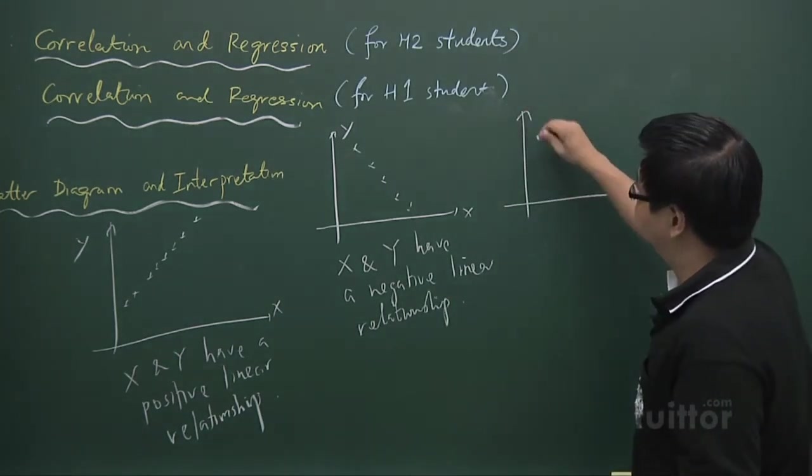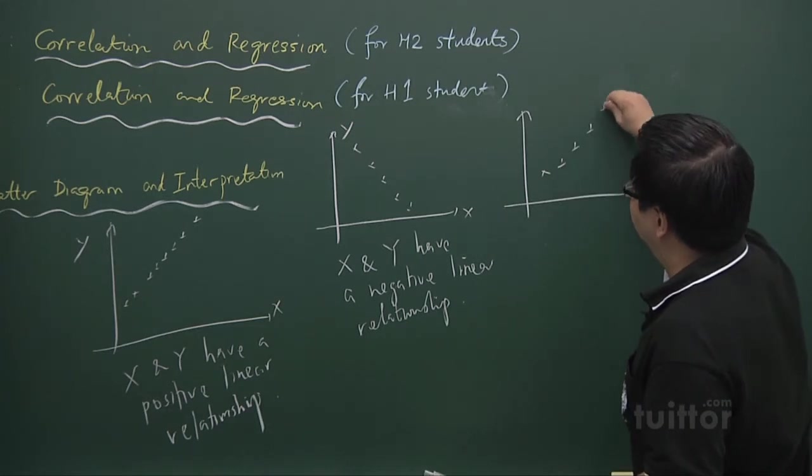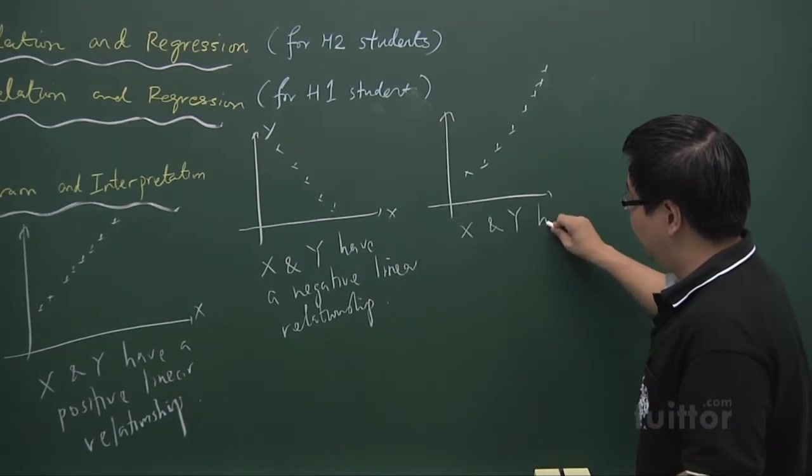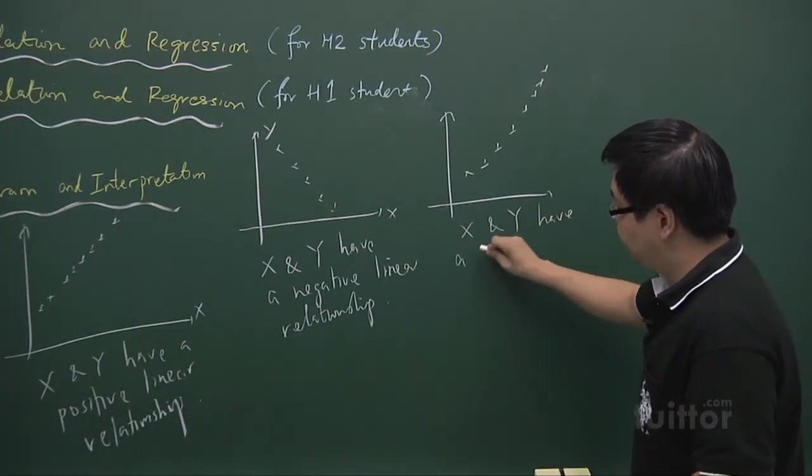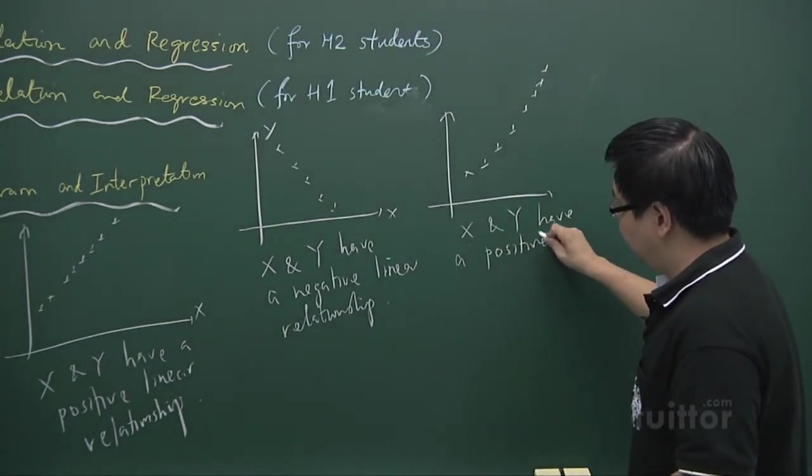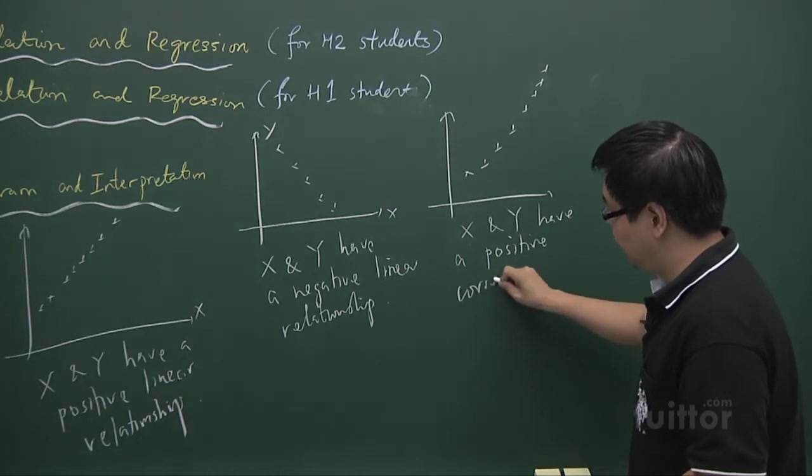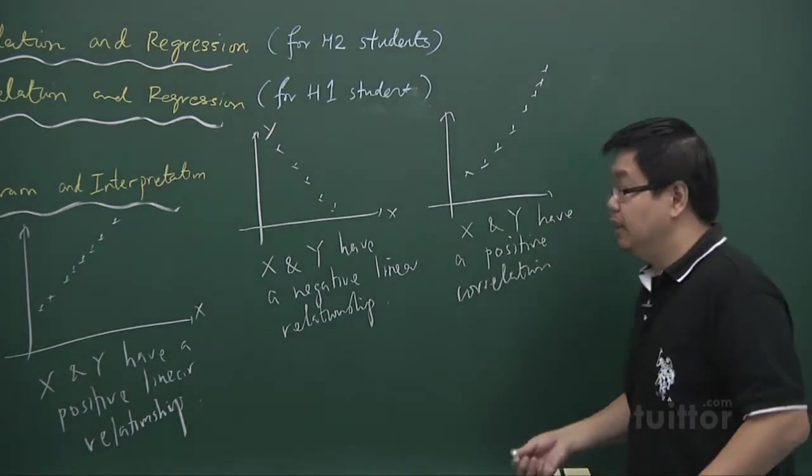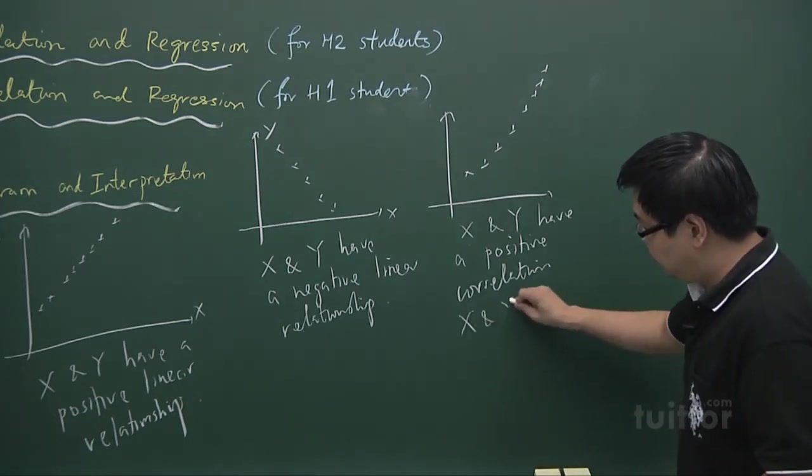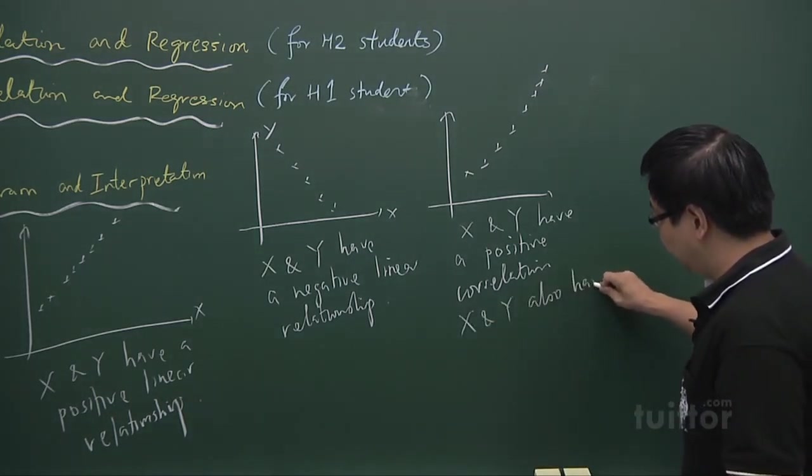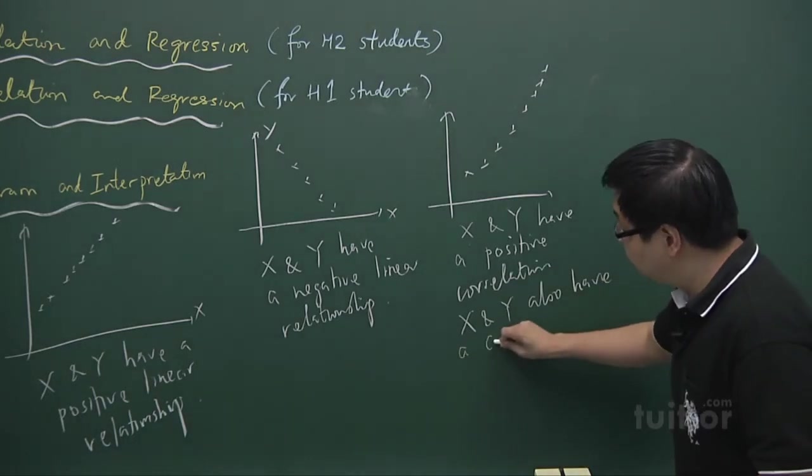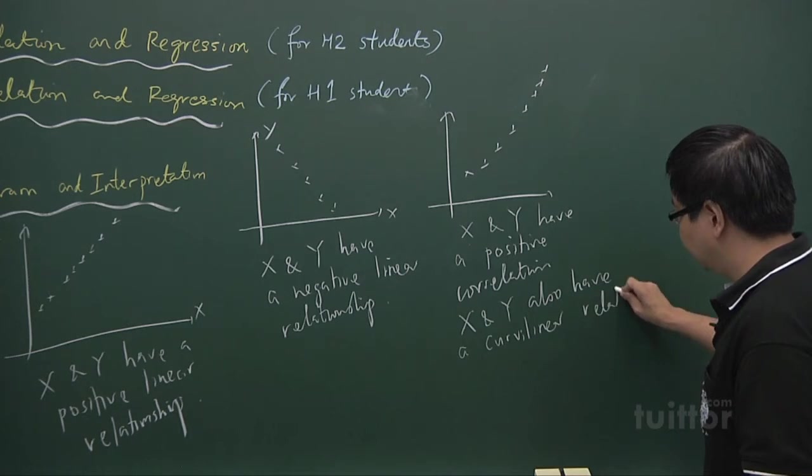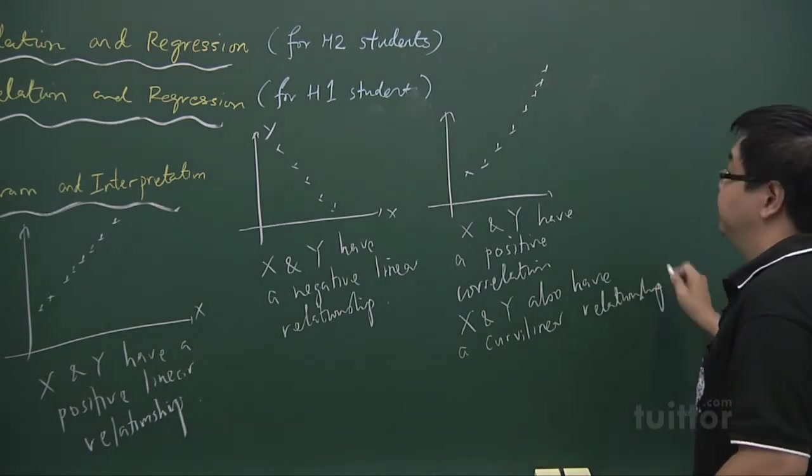So it's going up a little bit. We can say that x and y have a positive correlation. So it's some kind of relationship, positive. That means that as x increases, y increases. And we can also say that x and y have a curvilinear relationship because it's in the form of a curve.